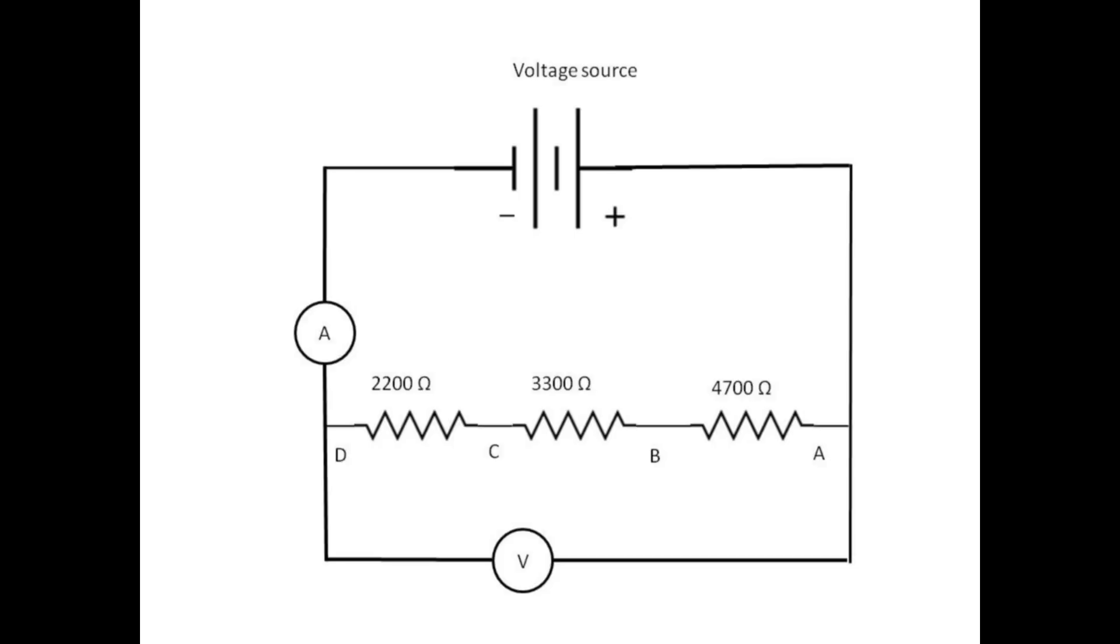A circuit diagram of the series resistors shows that the current is read by an ammeter placed in series between the resistors and the voltage source. The voltmeter, on the other hand, is placed in parallel with whichever element is reading the voltage across. As shown here, the voltmeter is reading the voltage across the entire combination between points A and D. You will systematically move the voltmeter to measure the voltage drop across each resistor separately.